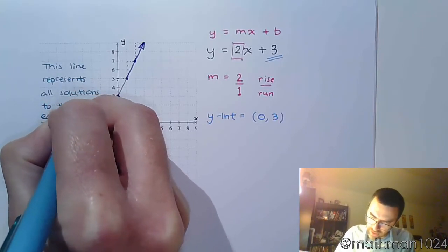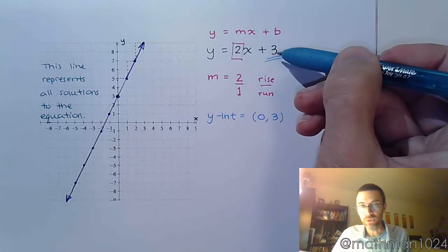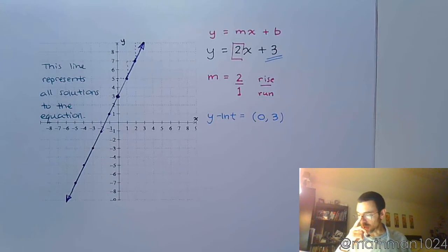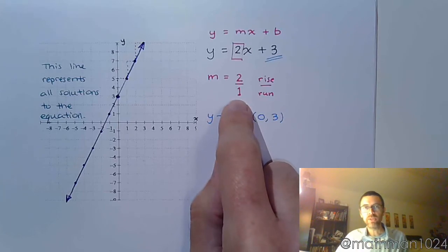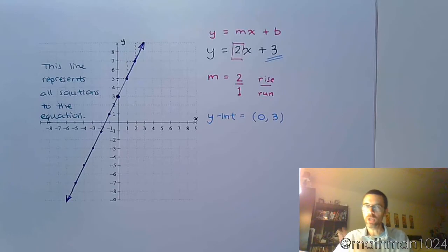That means any ordered pair, any point on this line, is supposed to be a solution to that equation. Now another thing to notice is we're talking about slope, and the slope tells us how we move from left to right. Since this slope is positive, as we go from left to right we're going up. If our slope is negative, we're going to be going down from left to right.